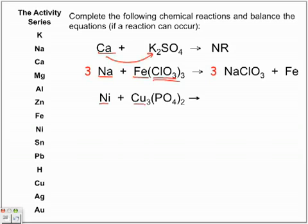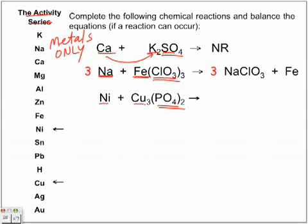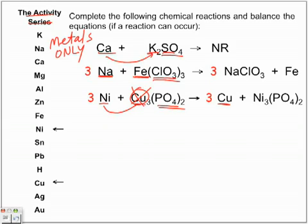Nickel is the metal; the activity series only covers metals. If you've identified a possible single displacement reaction, always look for metal/metal/non-metal. Will nickel knock out copper? Nickel is higher in the series, copper is lower, so yes — nickel will knock out copper, leaving copper lonely. Copper is not as reactive. Think of it like a bully coming in and saying 'hey copper, you're going to be lonely.' Then balance the equation.